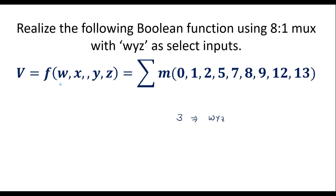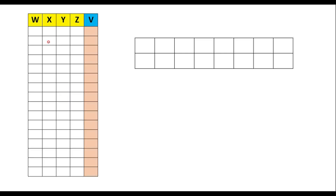Here by default w is the most significant bit and z is the least significant bit. To understand this, first let me write the truth table for these 4 variables: w, x, y, z. Though this truth table is not strictly required, if we write it, it will be very easy to understand.